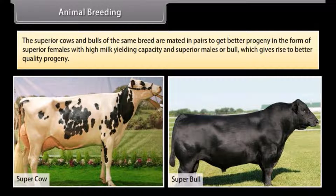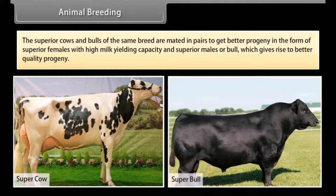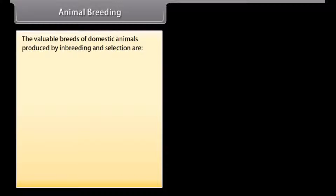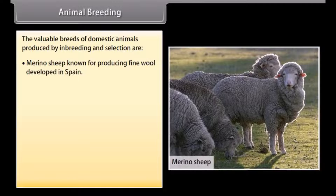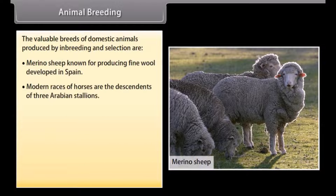In the form of superior females with high milk-yielding capacity and superior males or bulls which give rise to better quality progeny. The valuable breeds of domestic animals produced by inbreeding and selection include: number 1, Merino sheep, known for producing fine wool, developed in Spain; number 2, modern races of horses, which are descendants of three Arabian stallions.